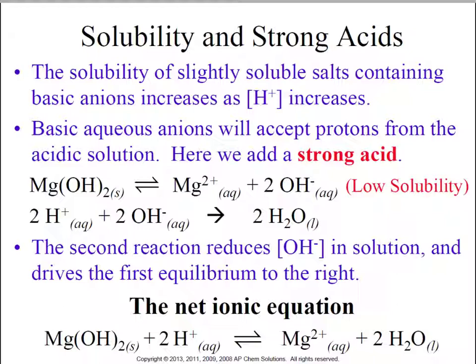Salts that produce hydroxides in solution can be driven to the right, so more soluble, by adding a strong acid. Like magnesium hydroxide, for example. Not a very soluble salt, but it does produce a small amount of hydroxide in solution. If we add a strong acid, like hydrochloric acid,